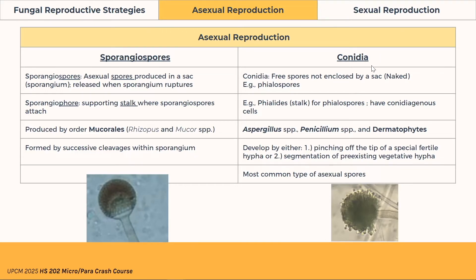Conidia are free spores — basically naked, without a sac. They have stalks called phialides for phialospores and they are conidiogenous. Species that have conidia include Aspergillus, Penicillium, and the dermatophytes. Conidia develop by either pinching off the tip of a special fertile hypha, or segmentation of a pre-existing vegetative hypha. Conidia are more common overall.